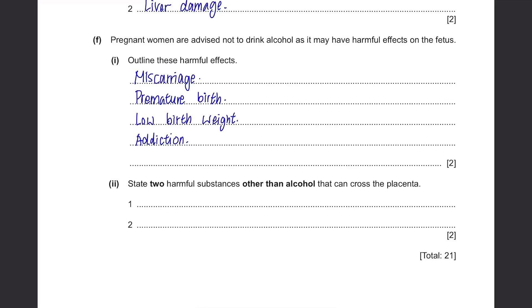State 2 harmful substances other than alcohol that can cross the placenta. Alcohol can cross the placenta, which is why pregnant women should not drink. Another substance that can cross the placenta is nicotine, so pregnant women should not smoke. All kinds of pathogens and viruses can also pass through the placenta — for example, HIV can be transmitted to the baby. Other things like drugs, pesticides, lead, and mercury can also cross. Even if you only need to write two answers, try to learn all of them as they may appear in Paper 2.